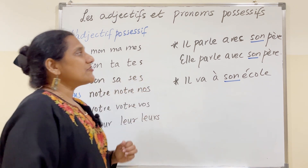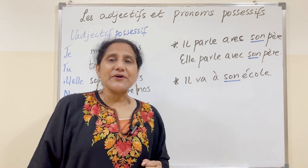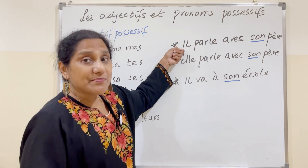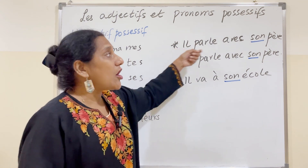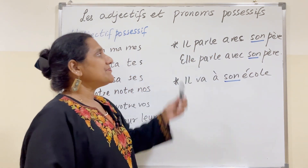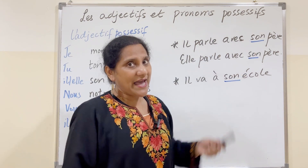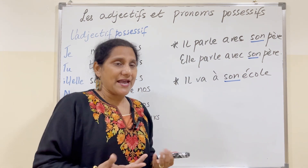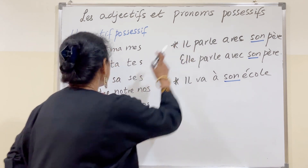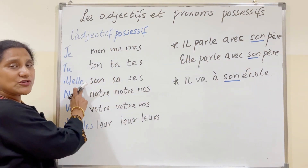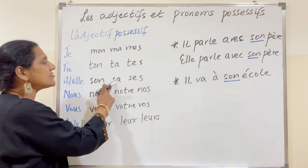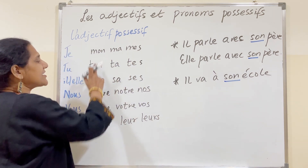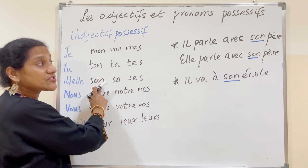Some rules to remember: the possessive adjective does not depend on the possessor, but it depends on the object possessed. For example, il parle avec son père. Père is masculine singular, so it's son père. My subject pronoun is il, so my options are son, sa, ses. And père is masculine singular, so I need to use son.